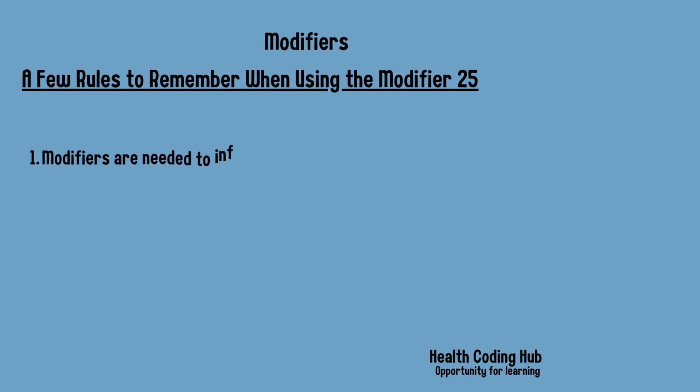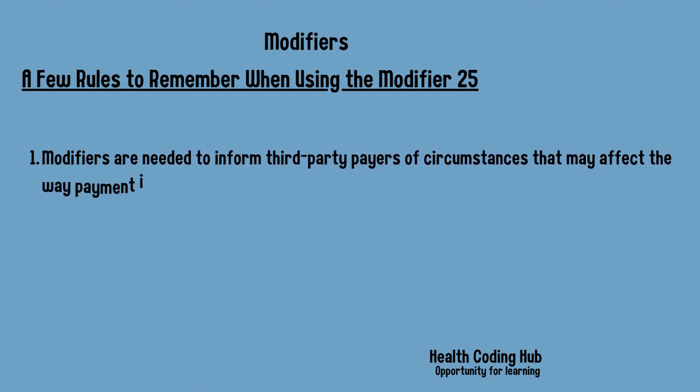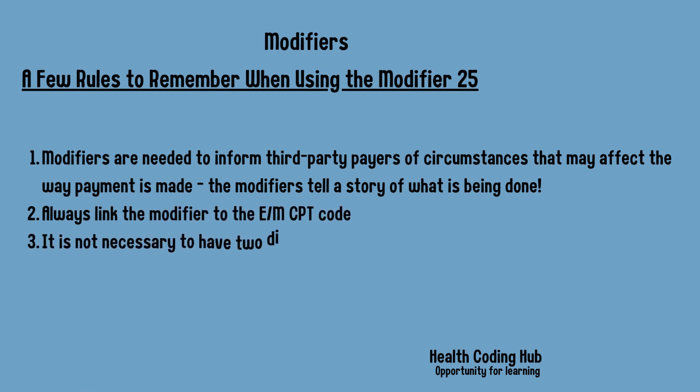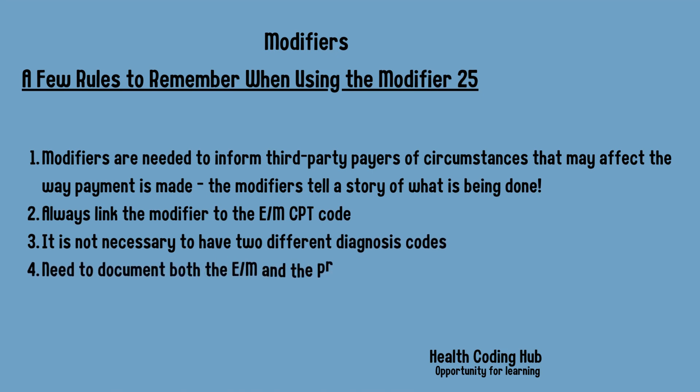A few rules to remember about when to use modifier 25: As per the NCCI general coding guidelines, modifier 25 may be appended to an E&M service reported with minor surgical procedures. Minor surgical procedures are those with 0 to 10 days of global period. Since minor surgical procedures include pre-procedure, intra-procedure, and post-procedure work, the provider should not report additional E&M service for this work. Furthermore, medical global surgery rules prevent reporting of separate E&M service for work associated with the decision to perform a minor surgery, whether the patient is new or established.